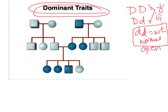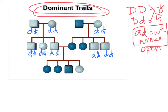So what would we do? We'd go immediately and fill in all of the open squares and open circles with the genotype we know — that's all they can be, it's a dominant trait. Whoops, forgot that little guy right there.